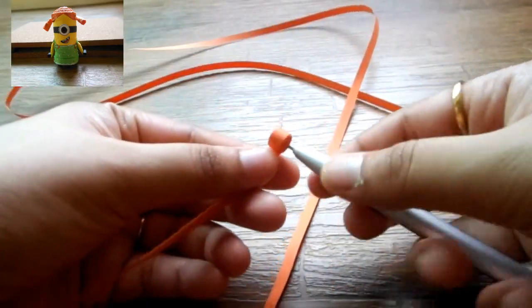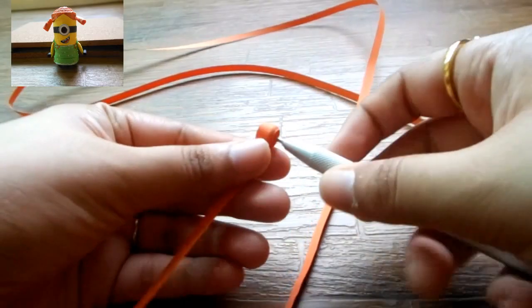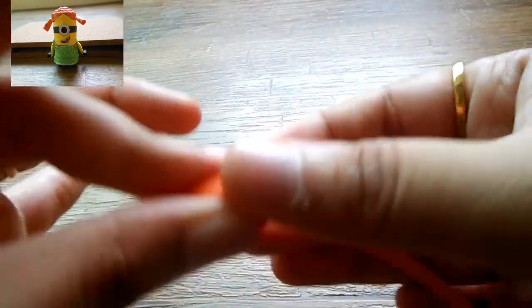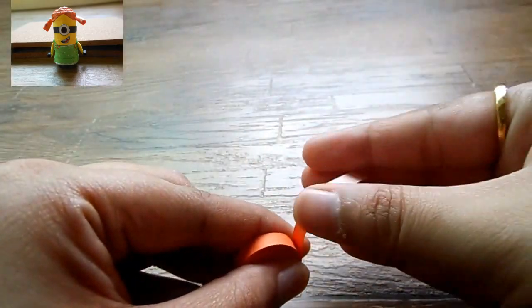For the top part of the head, I have stuck together 7 paper quilling strips of orange color and I have coiled this into a very tight coil.